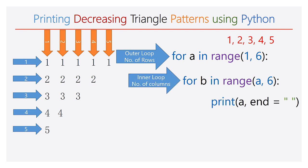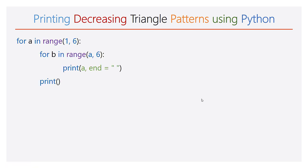The print function with variable a and end attribute is used. The intention of taking a as the variable in the print function is: in the output we need 5 ones in the first line, four 2s in the second line, and so on, with the number 5 in the fifth line. If you consider b as the variable, during the inner iteration the value of b will be changing but the value of a will remain constant. An empty print function is used so as to start printing the numbers on a new line after completing the inner for loop.